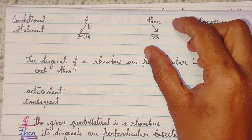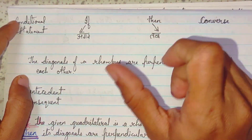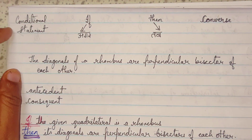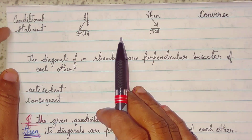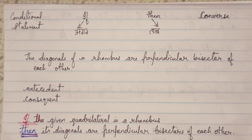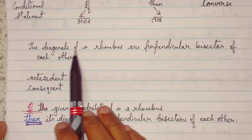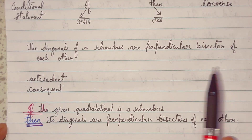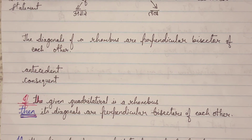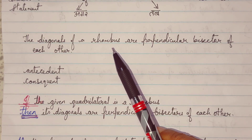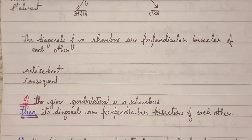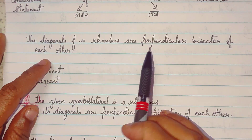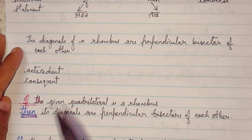If an 'if-then' statement is formed, it is said to be a conditional statement. For example, if we take the statement: 'The diagonals of a rhombus are perpendicular bisectors of each other' — this is a simple statement. How will we change this statement into if-then form?